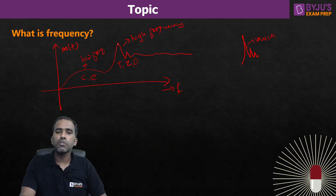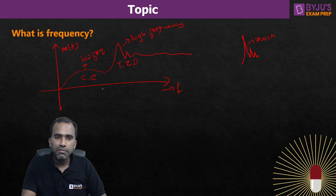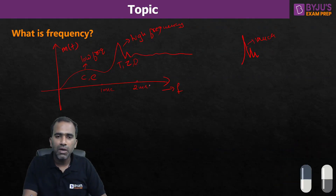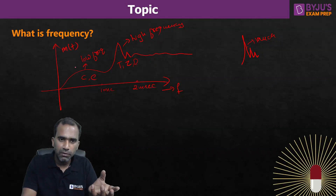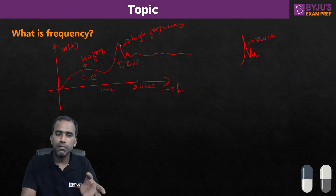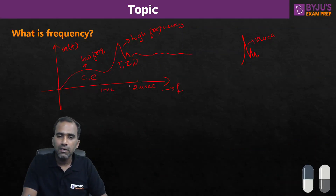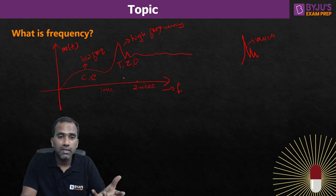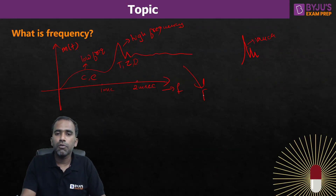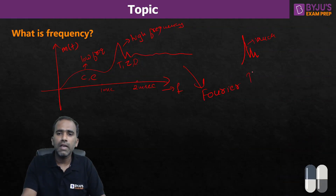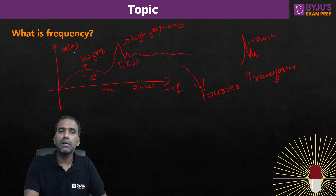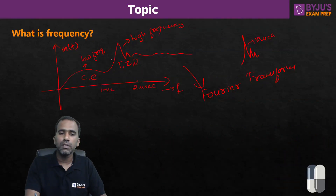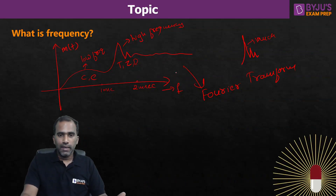In any practical signal with a complicated waveform, we cannot directly calculate the exact frequencies present. By looking at the waveform, you can only say which parts correspond to low frequency and which to high frequency. You can calculate the frequencies present only with the help of Fourier transform. With Fourier transform, we can understand what frequencies are present in the signal — but for that, you need a mathematical equation describing the signal.